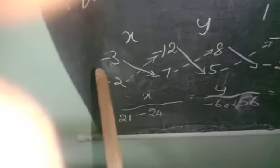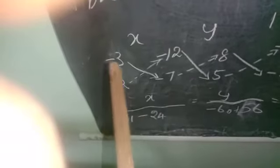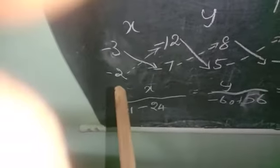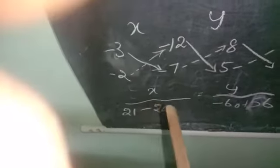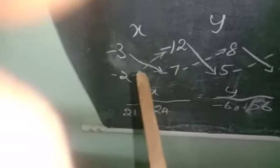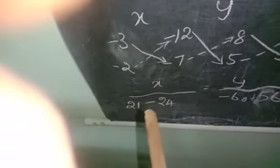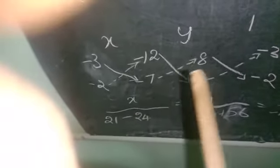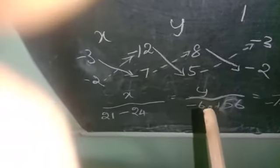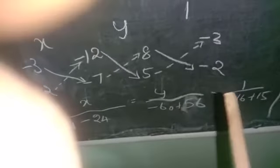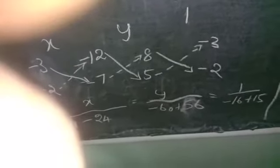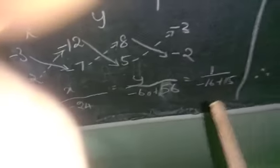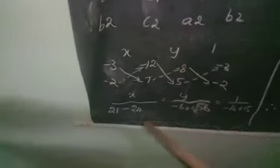First, we multiply: minus 3 into minus 7 gives 21. On this side we write minus, so minus 2 into minus 12 gives plus 24. The formula has a minus, so minus 24. Then y divided by: minus 12 into 5 gives minus 60, minus 7 into 8 gives minus 56. The formula has a minus, so minus into minus gives plus 56. Then 1 divided by: 8 into minus 2 gives minus 16, and 5 into minus 3 gives minus 15. The formula has a minus, so plus 15. Now we simplify the denominators.